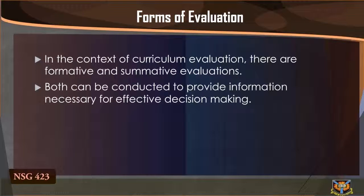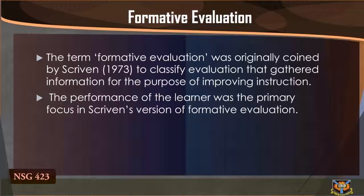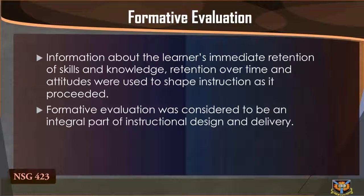Forms of evaluation. In the context of curriculum evaluation, there are formative and summative evaluations. Both can be conducted to provide information necessary for effective decision making. Formative evaluation. The term formative evaluation was originally coined by Scriven (1973) to classify evaluation that gathered information for the purpose of improving instruction as the instruction was being given. The performance of the learner was the primary focus. Information about the learner's immediate retention of skills and knowledge, retention over time, and attitude were used to shape instruction as it proceeded.